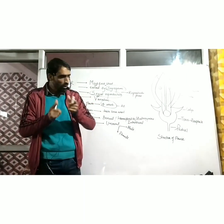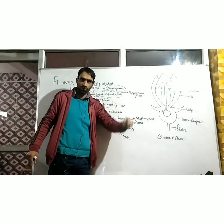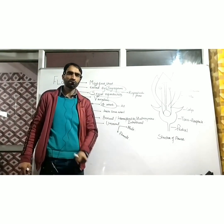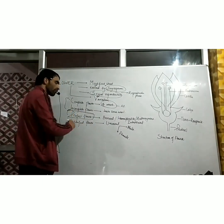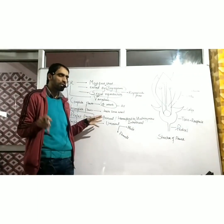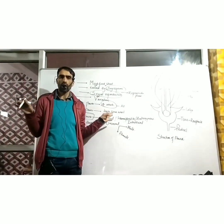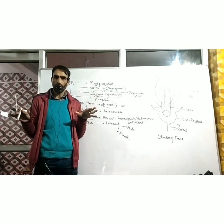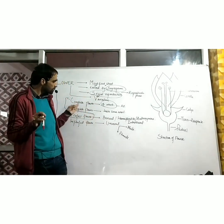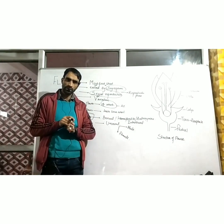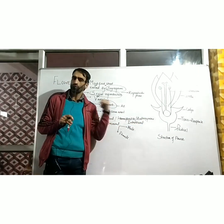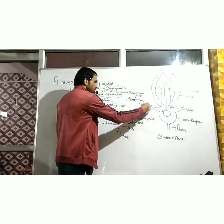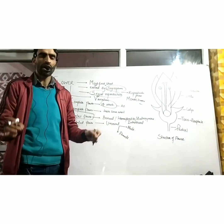A flower which contains both the male reproductive whorl as well as the female reproductive whorl — a flower which has the property to make pollen grains, male gametes, as well as egg cells — that flower is called a perfect flower. A perfect flower is a bisexual flower; it is hermaphrodite. Just as in animals there could be organisms with both sexes — hermaphrodites — similarly this bisexual, perfect flower is hermaphrodite. It is androgynous, having androecium as well as gynoecium, and is sometimes called monoecious.